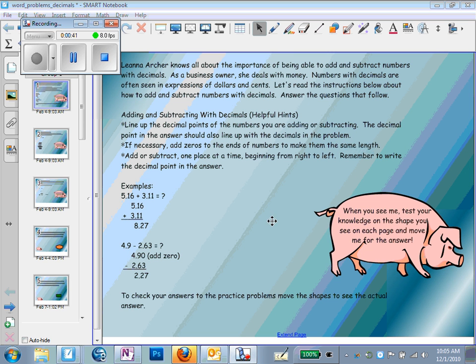Adding and subtracting with decimals - here are some helpful hints. You always want to line up the decimal points of the numbers you are adding or subtracting. The decimal point in the answer should also line up with the decimals in the problem. If necessary, add zeros to the ending numbers to make them the same length. Add or subtract one place at a time beginning from right to left. Remember to write the decimal point in the answer.